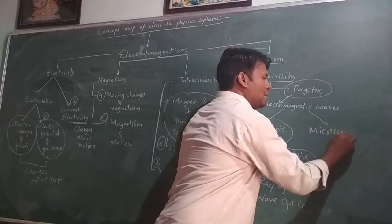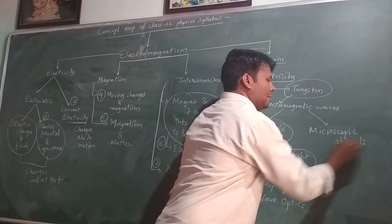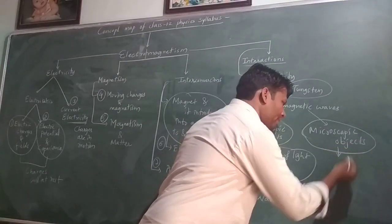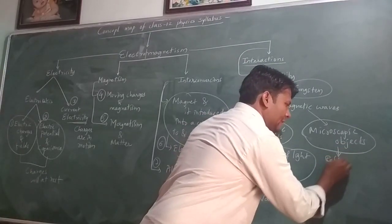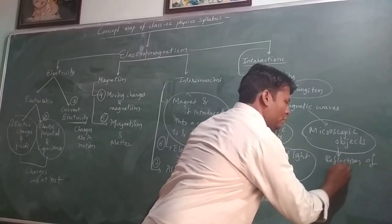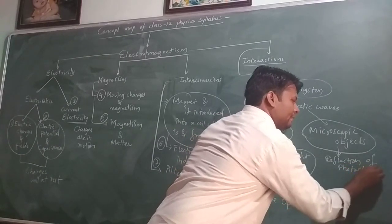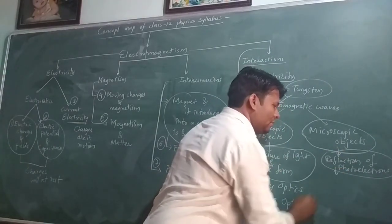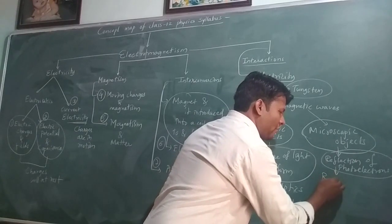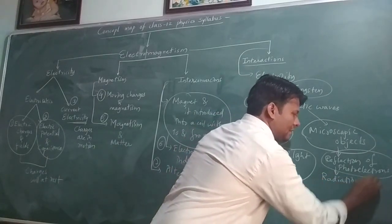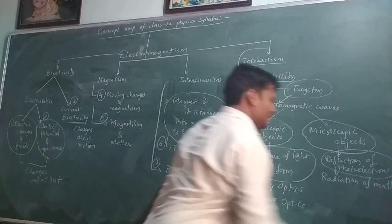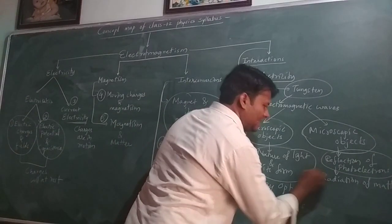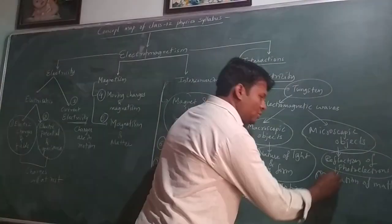When the same electromagnetic waves interact with macroscopic objects, we get Ray Optics — the ninth chapter — and Wave Optics — the tenth chapter. When electromagnetic waves interact with microscopic objects, we observe the reflection of photoelectrons, giving rise to radiation of matter-like chapters — that is the eleventh chapter.